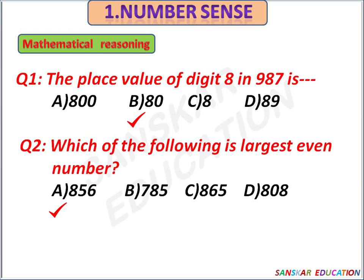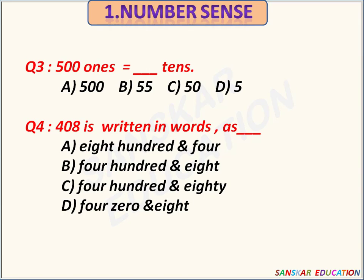Next question: 500 ones equals to dash 10s. Options are 500, 55, 50, 5. 500 ones equals to 50 tens. Option C is the correct answer.